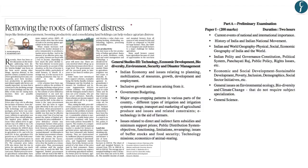The first news appears as a lead article on page number 8. It says 'Removing the roots of farmers' distress' — steps like limited procurement, boosting productivity and consolidating land holdings can help reduce agrarian distress. This article becomes extremely important because different questions have been asked by UPSC on issues relating to Indian agriculture. The article has been written by C. Rangarajan, a former chairman of the Economic Advisory Council to the Prime Minister, making his views on agrarian distress extremely important for the upcoming examination.